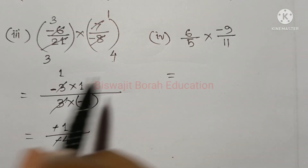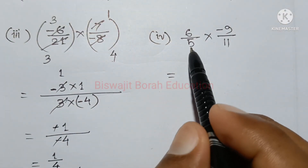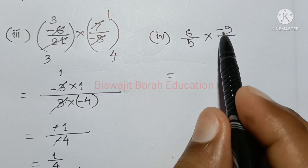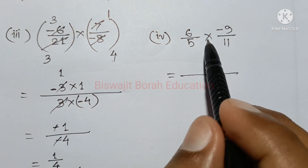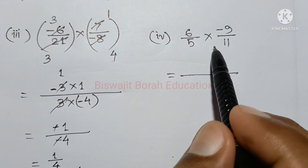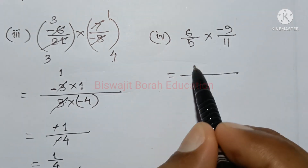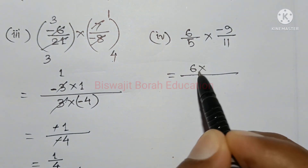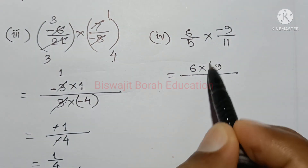Now for the 6th number: the 6th number multiplied is 6 by 5 into minus 9 by 11. So we will do cross-cancellation — 6 into minus 9 on top.